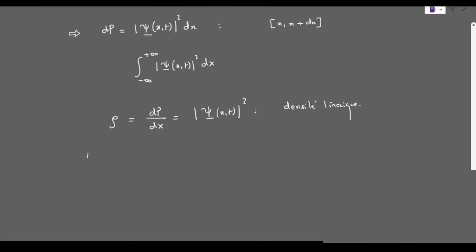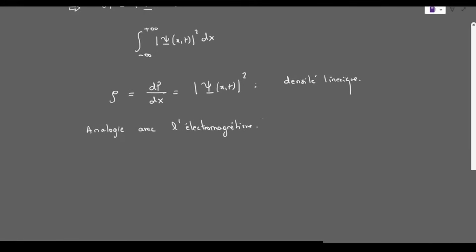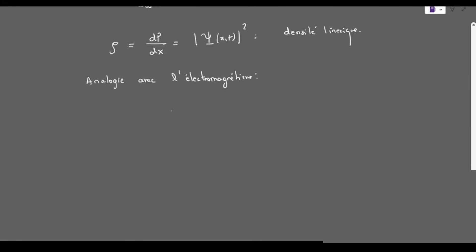From this linear density ρ, we can make the analogy with electromagnetism. One can construct a conservation equation as in electromagnetism. In electromagnetism, the conservation equation is ∂ρ/∂t plus the divergence of j, which transforms into ∂j/∂x in one dimension, equals zero. It's a conservation equation.